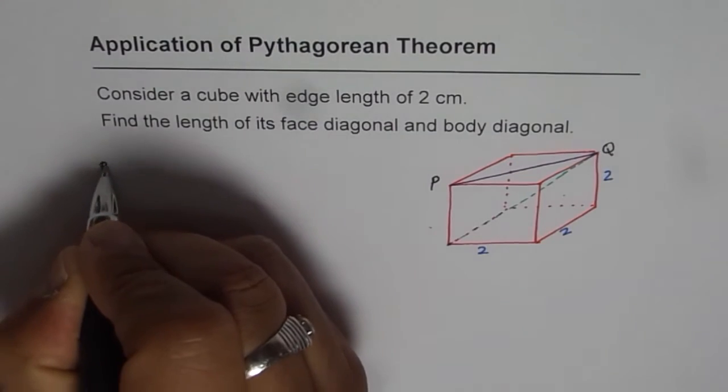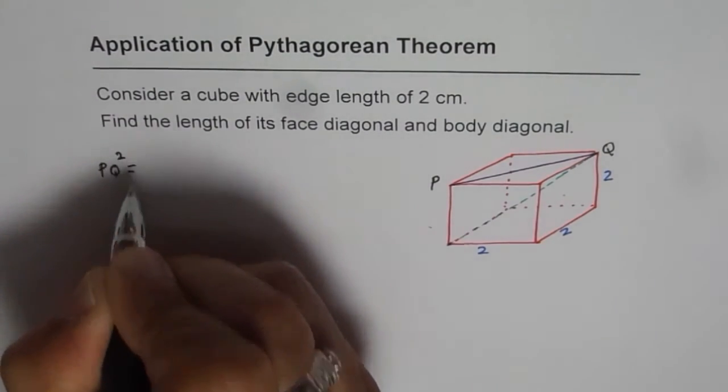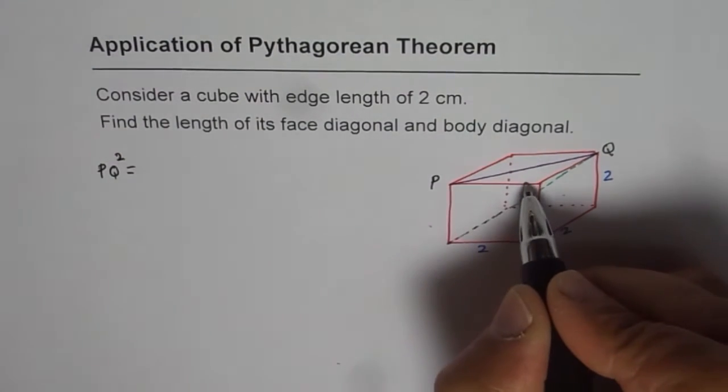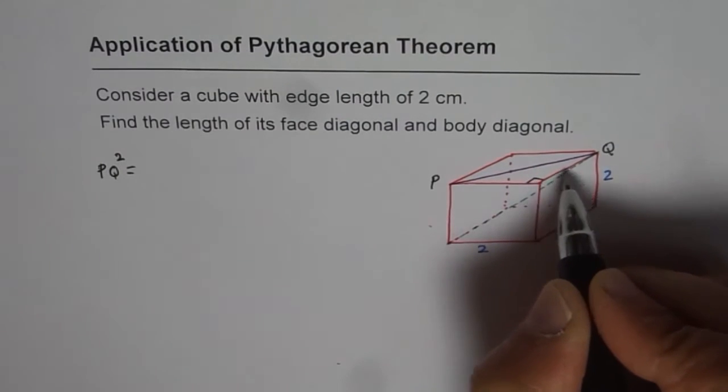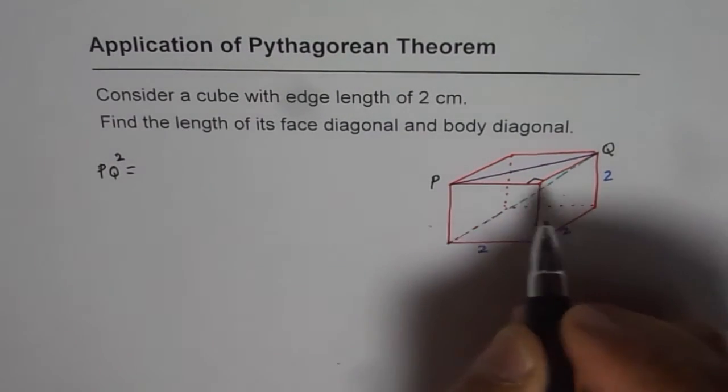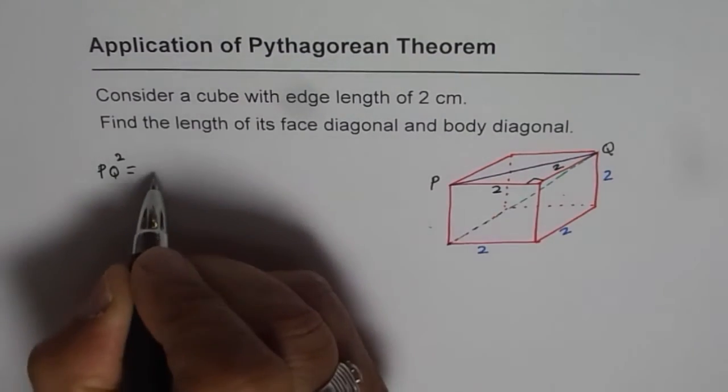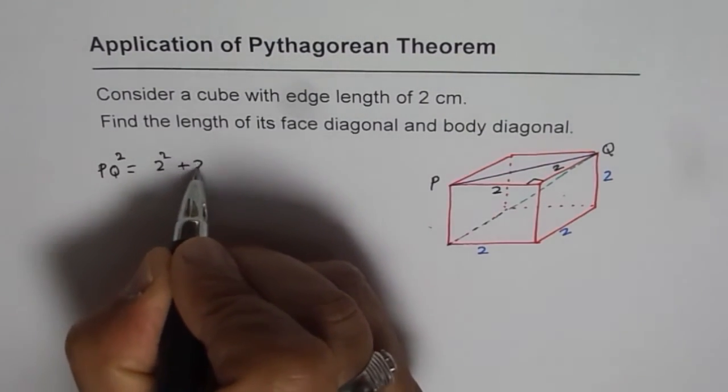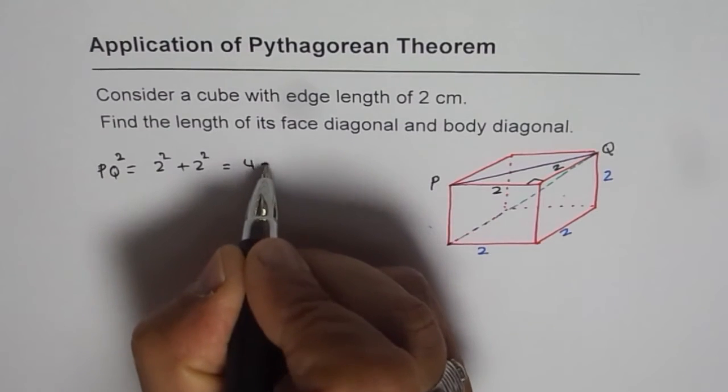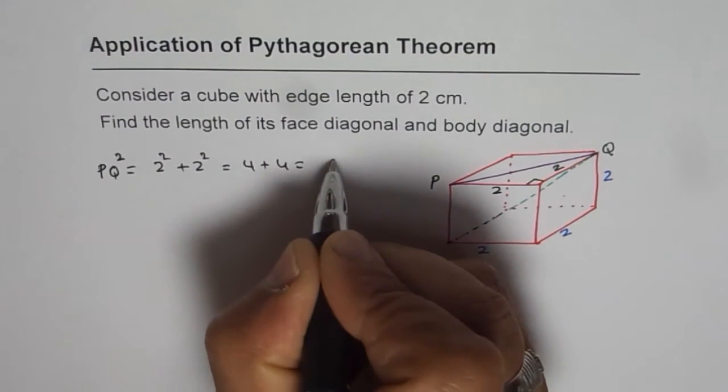So PQ square should be equal to, now these are at right angles, right? This is a cube. And these sides are 2 each. So that is 2 square plus 2 square, that is 4 plus 4 or 8.